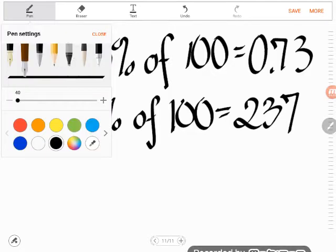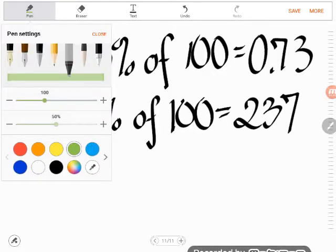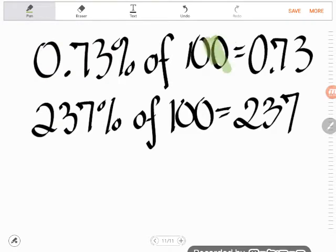Again, the only reason why I can do that is because they're out of 100. If it was out of any other number, I'd have to do the nasty math.